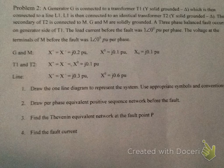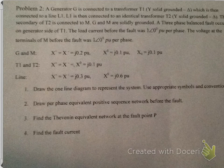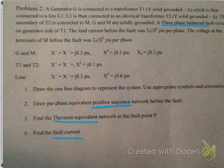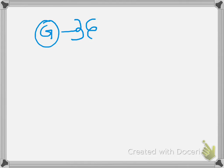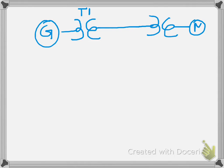All the reactances are given. We have to: draw the one-line diagram, draw the per-phase equivalent positive sequence network only, draw the Thevenin equivalent, and find the fault current for the three-phase balanced fault. Let's draw the one-line diagram first. We have generator G connected to transformer T1, then line L1, then transformer T2, and then the motor. Both the generator and motor are solidly grounded.